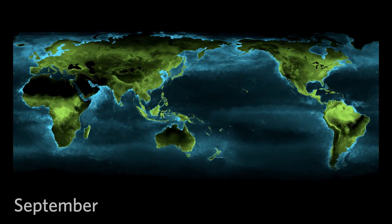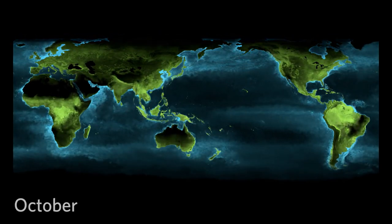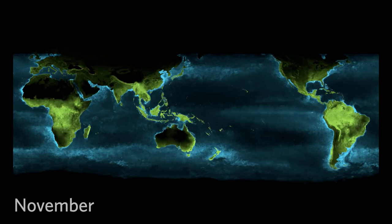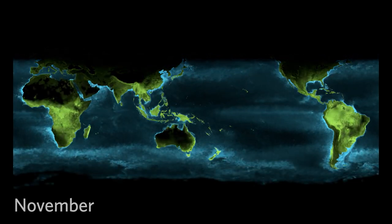On land, forests grow green during the spring, brightening the continents. During winter, continents in this view turn dark from a lack of photosynthesis.